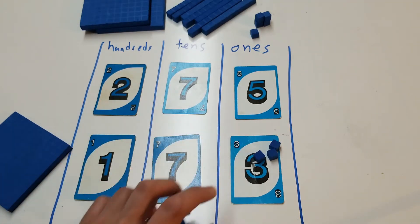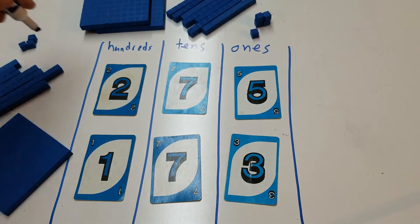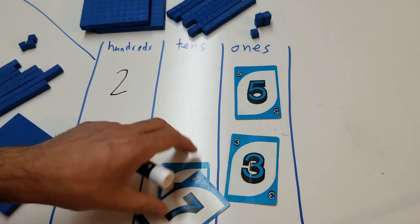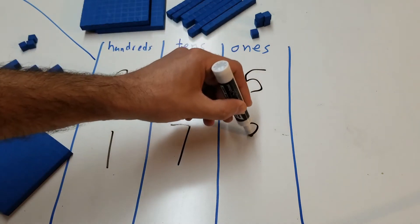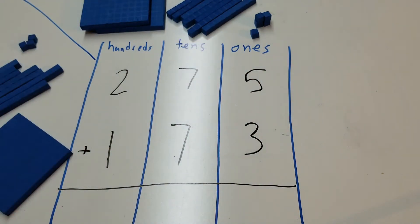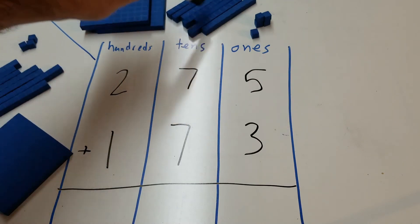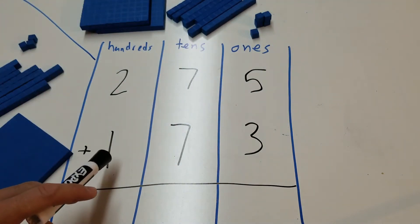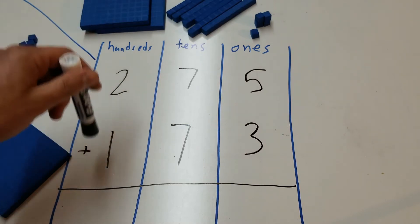Let's move this out of the way for a moment. We'll move this three over here — this is our bottom number and this is our top number. We'll draw this line here to keep them separate. Now I'm going to take away these cards and replace them with written numbers: one, two, we've got our sevens in the middle, and a five and a three. This number here is 275 — two hundreds, seven tens which makes 70, and five ones. This number here is 173 — one hundred, seven tens which is 70, and three ones.